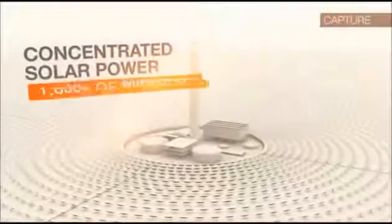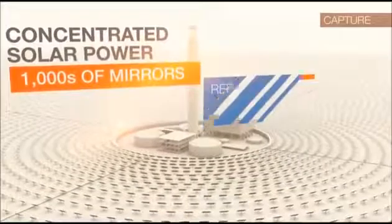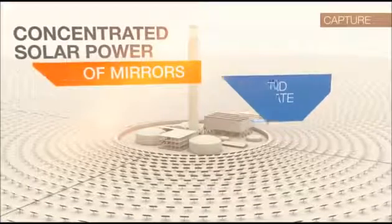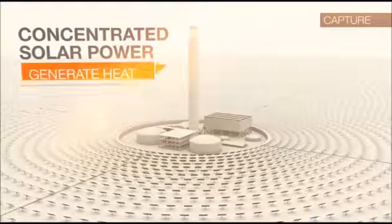Concentrated solar power uses thousands of mirrors to reflect and concentrate sunlight onto a central point to generate heat, which in turn is used to generate electricity.